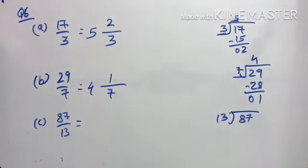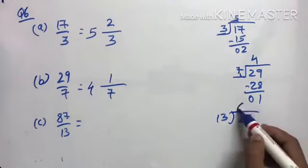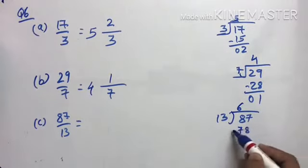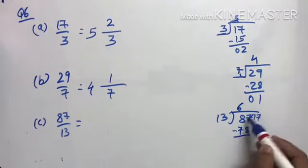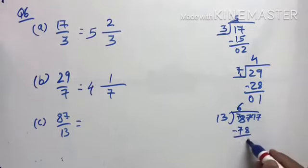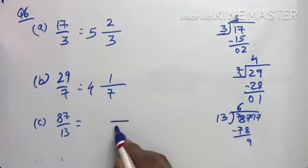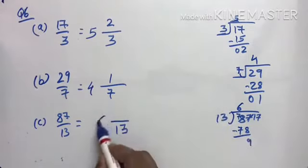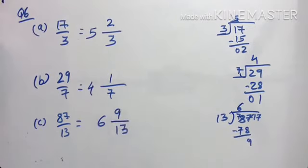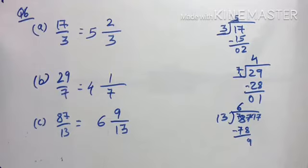For 87/13: divide 87 by 13 — 13 sixes are 78, remainder 9 (since 13 sevens are 91 which is too large) — so the answer is 6 and 9/13. The whole number goes in the middle, the denominator stays, and the remainder becomes the numerator of the proper fraction.